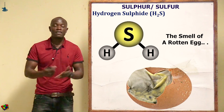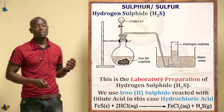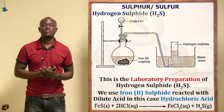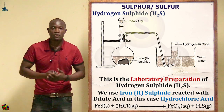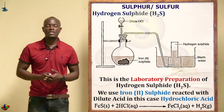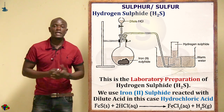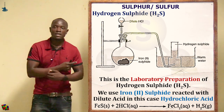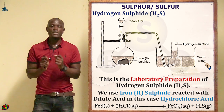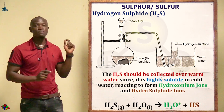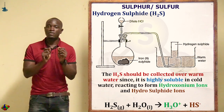Below is a diagram showing the setup for the preparation of hydrogen sulfide in the laboratory, whereby we react dilute hydrochloric acid with iron(II) sulfide. This dilute hydrochloric acid is reacted with iron(II) sulfide in order to obtain hydrogen sulfide. Note that hydrogen sulfide is collected over warm water.